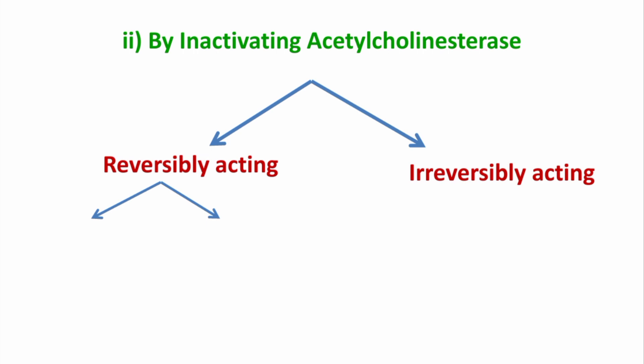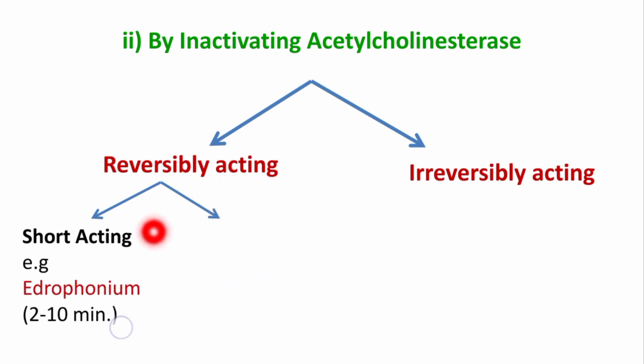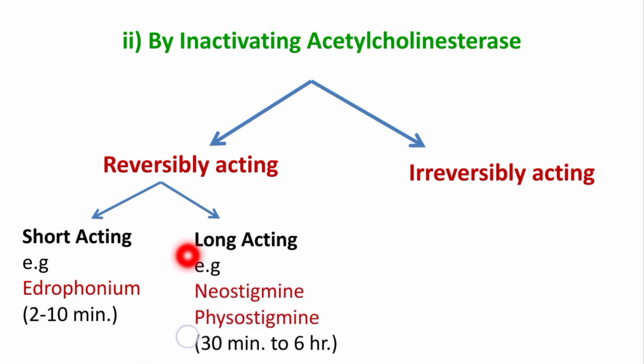The second category is drugs which act by inactivating the enzyme acetylcholinesterase, and these can be classified into two subgroups: reversibly acting and irreversibly acting. Reversibly acting drugs are of two types — short-acting like edrophonium, which acts for 2 to 10 minutes, and long-acting drugs like neostigmine and physostigmine, which act for about 30 minutes to 6 hours.